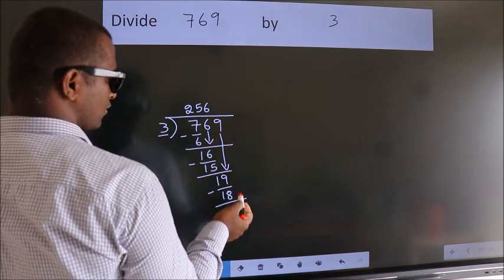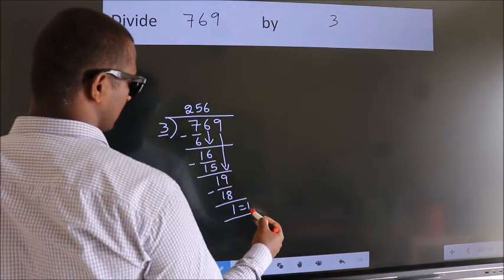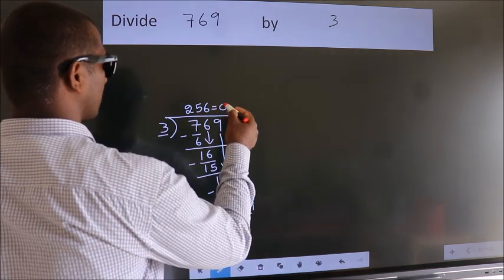No more numbers to bring down, so we stop here. This is our remainder. This is our quotient.